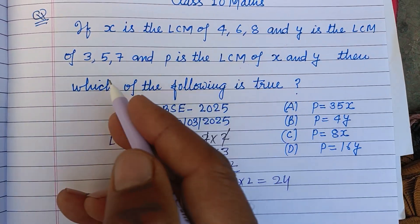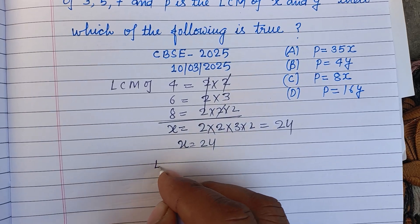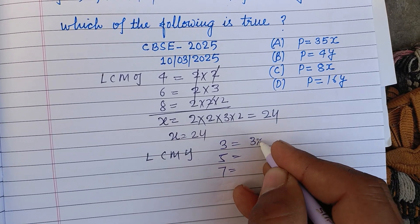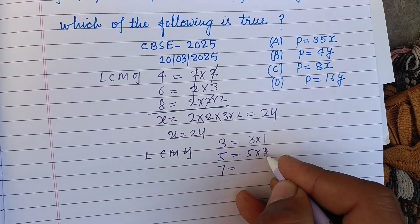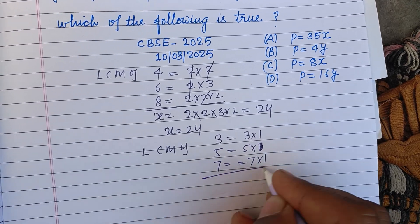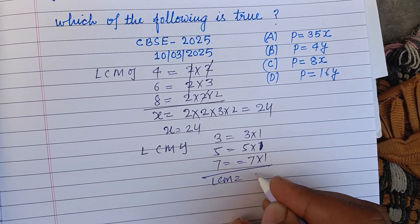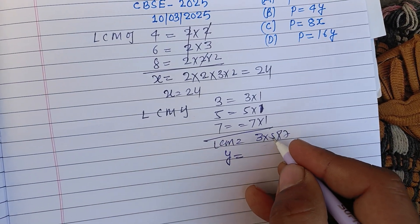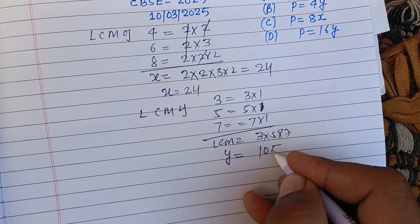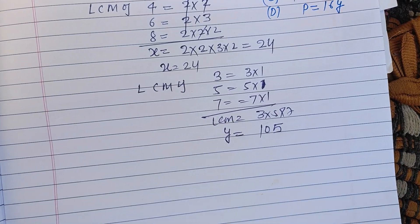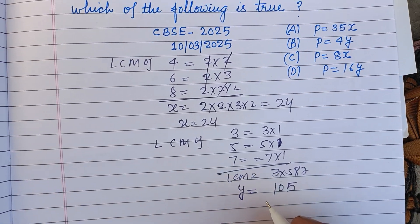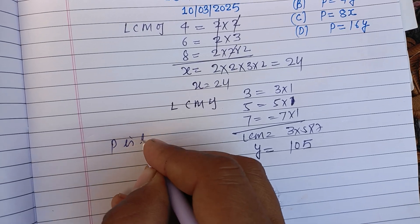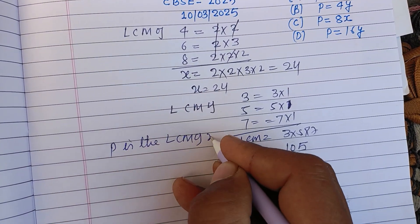Now LCM of 3, 5, 7. Since 3, 5, and 7 are all prime numbers: 3×1, 5×1, 7×1. Therefore LCM is 3×5×7, which is given to us as y. So 3×5=15, 15×7=105. Therefore y equals 105.